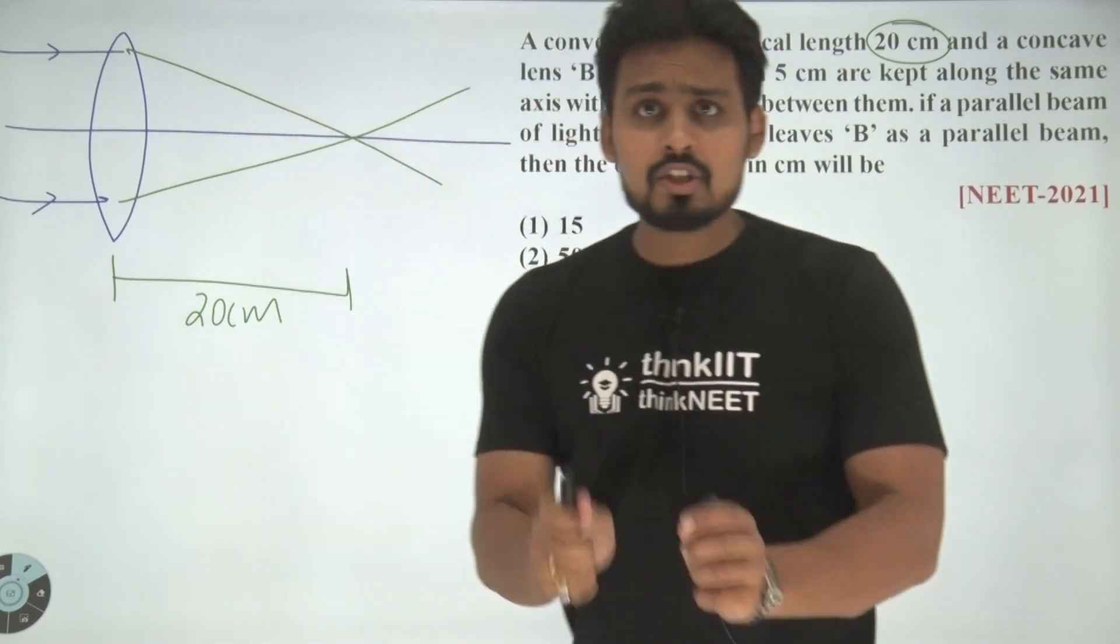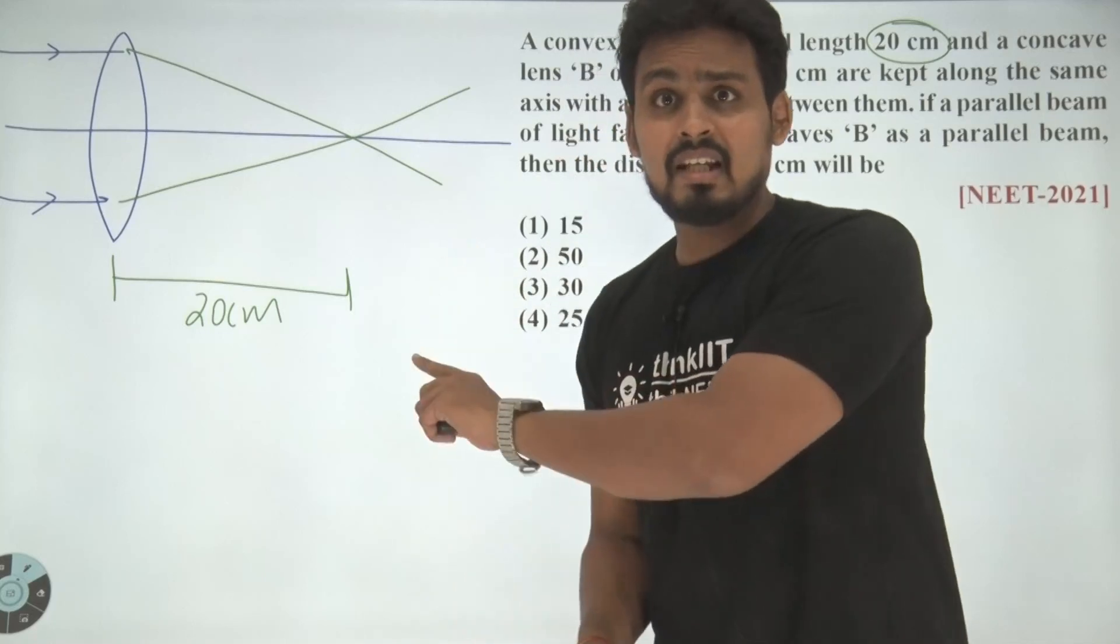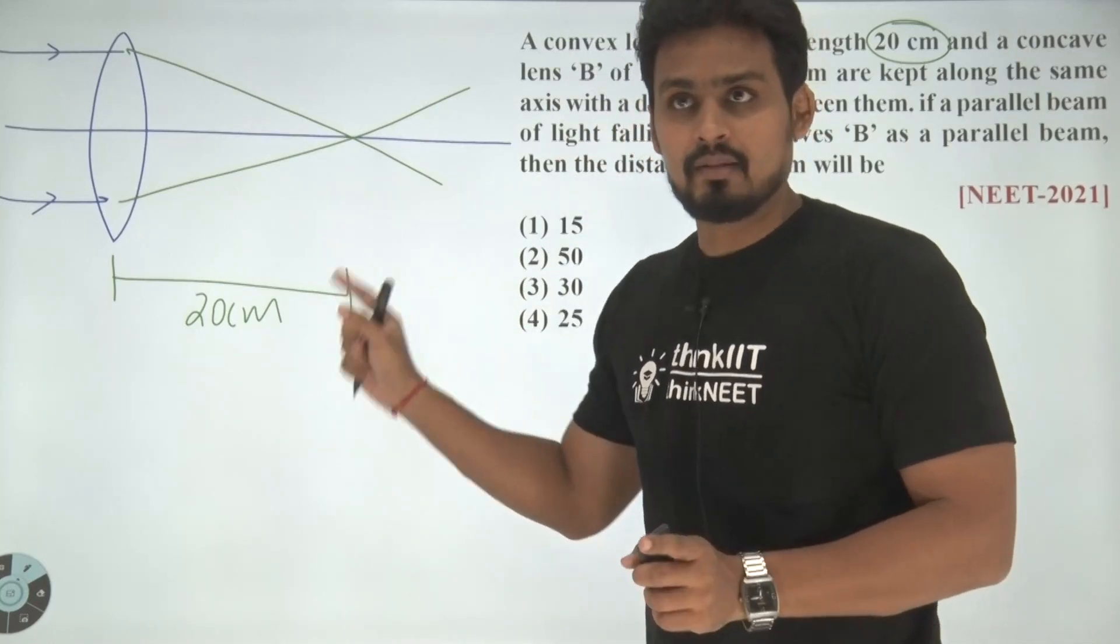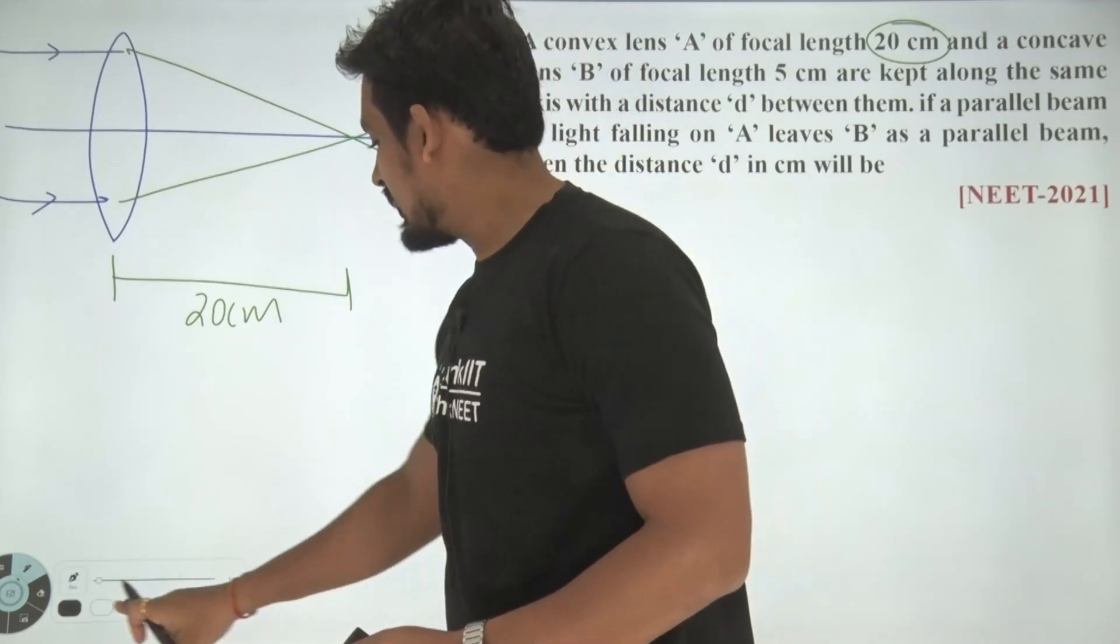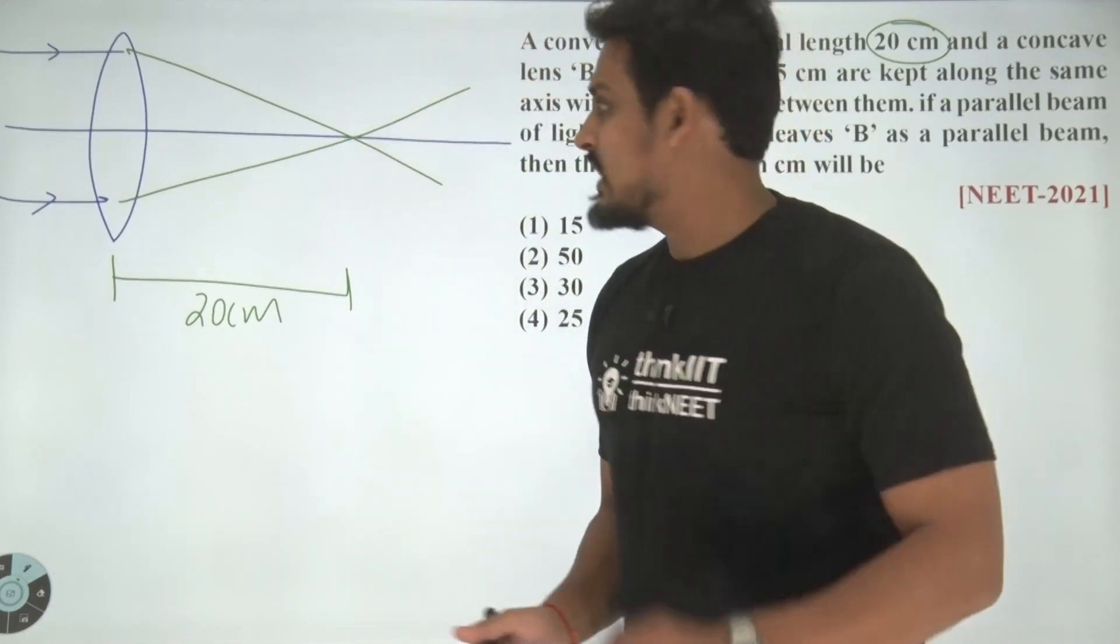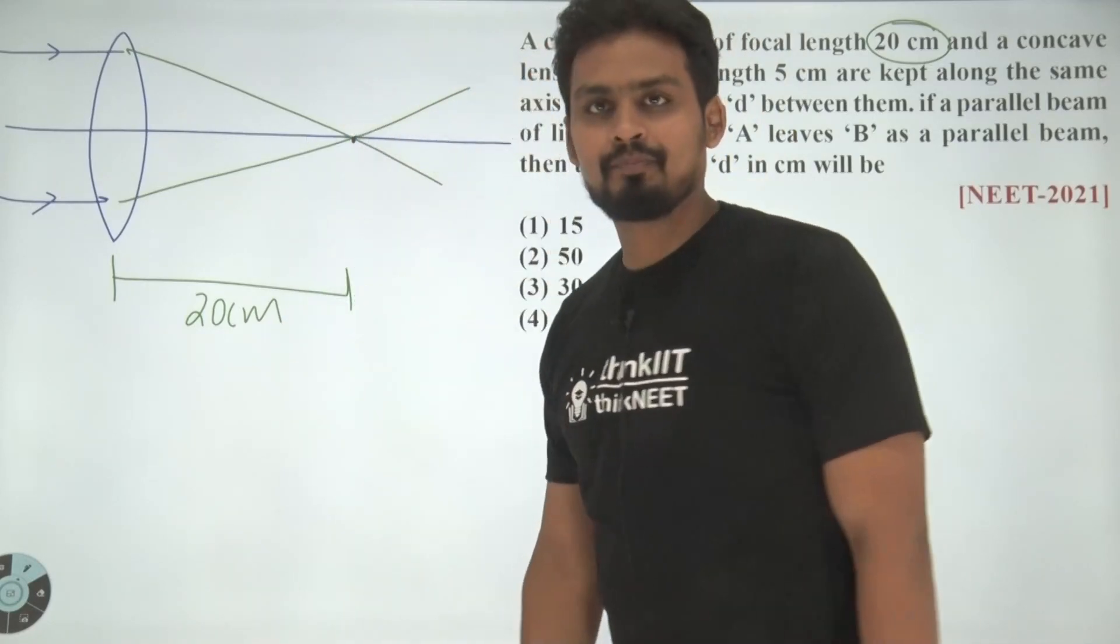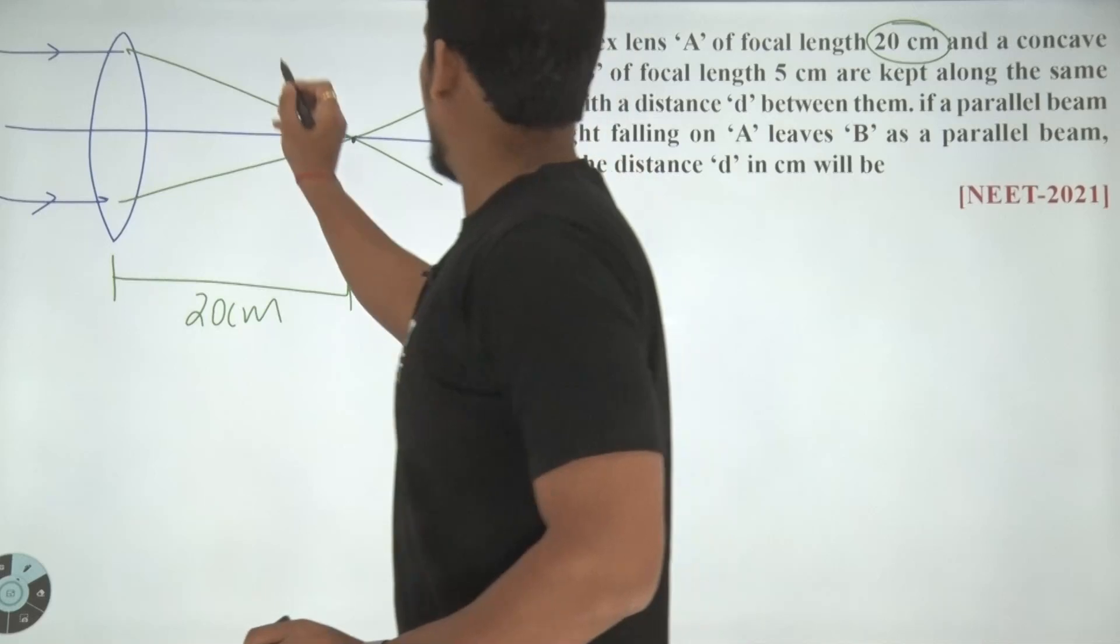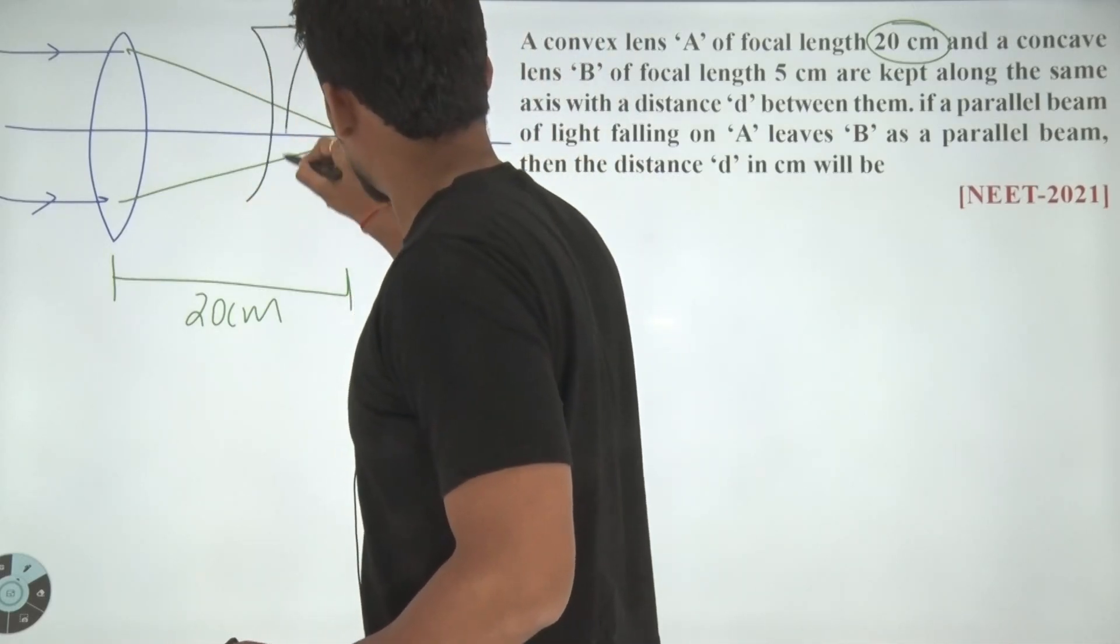Now we also have a concave lens. Upon refraction, these rays should be parallel, right? So where should I place the concave lens so that the rays would become parallel?